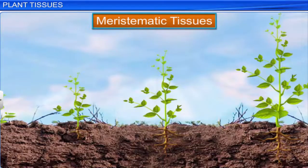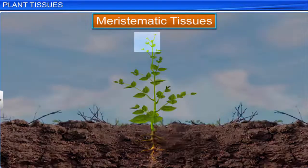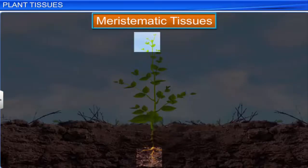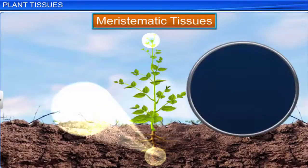Look at how this plant is growing month by month. This is due to a special type of tissue called meristematic tissue. These tissues are rapidly dividing tissues. Plant growth occurs only at those points where these tissues are present — the tips of the stem and the root.